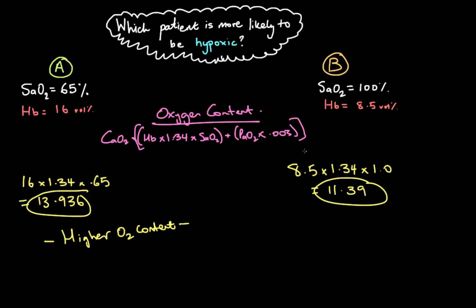If they're satting a hundred percent it's a hundred percent of eight and a half grams of hemoglobin whereas in this case 65% of 16 grams of hemoglobin is actually a higher oxygen carrying capacity. So this patient is less likely to be hypoxic and the answer is that B, this patient, is more likely to be hypoxic, assuming that all other conditions are the same between the two patients.